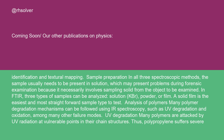In all three spectroscopic methods, the sample usually needs to be present in solution, which may present problems during forensic examination because it necessarily involves sampling solid from the object to be examined. In FTIR, three types of samples can be analyzed: solution, KBr powder, or film. A solid film is the easiest and most straightforward sample type to test. Analysis of polymers — many polymer degradation mechanisms can be followed using IR spectroscopy, such as UV degradation and oxidation, among many other failure modes.